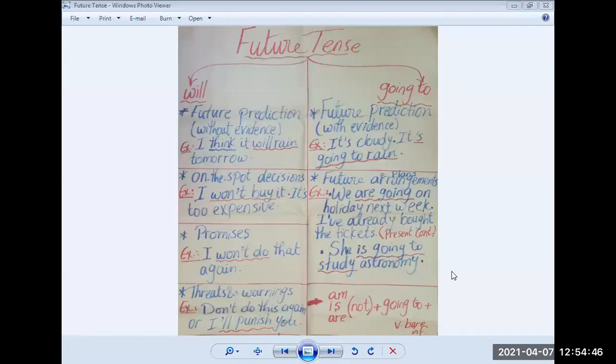So according to your book, we can express the future using four forms, which are future will, future going to, present continuous, or present simple. However, each one of them gives a different meaning. So let's discuss together what meaning does each and every one of them give.